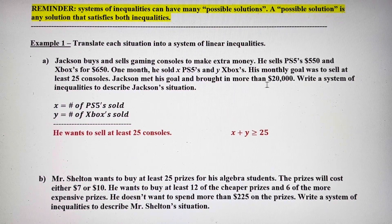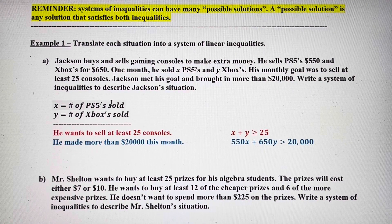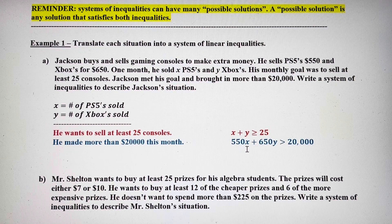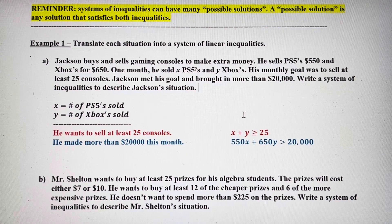He brought in more than $20,000. He sold PS5s for $550 and Xboxes for $650. So the $550 goes with the x, because PS5s match up with PS5s. And the $650, the price for the Xbox, goes with y. So 550 times each PS5 sold plus 650 times each Xbox sold would be greater than $20,000. This would be our system of inequalities for that situation. We're not going to solve here — we just want to write the system by translating.